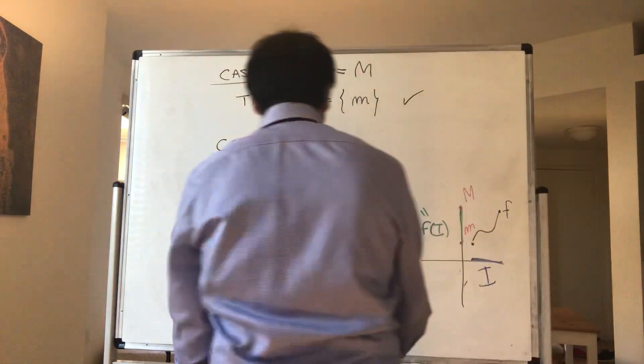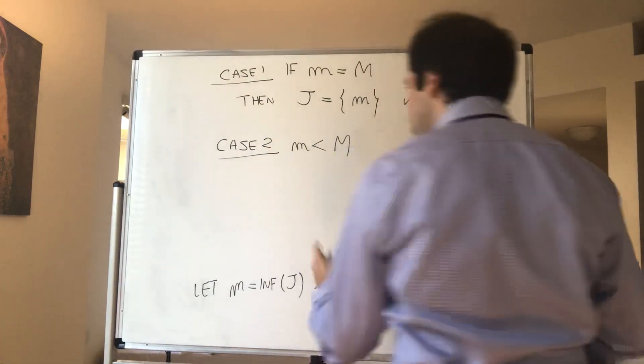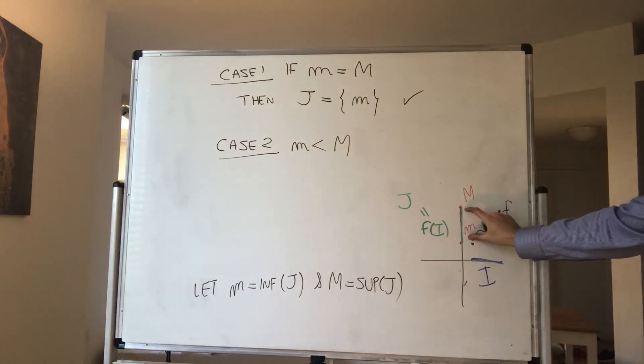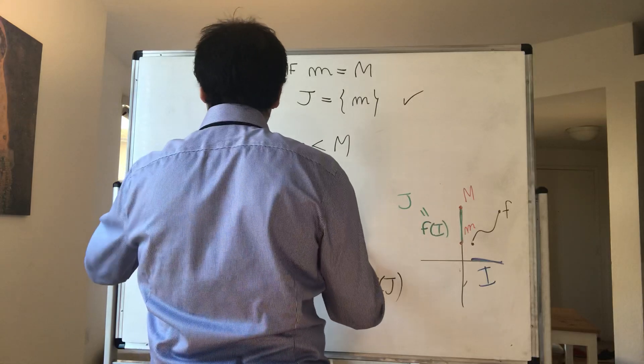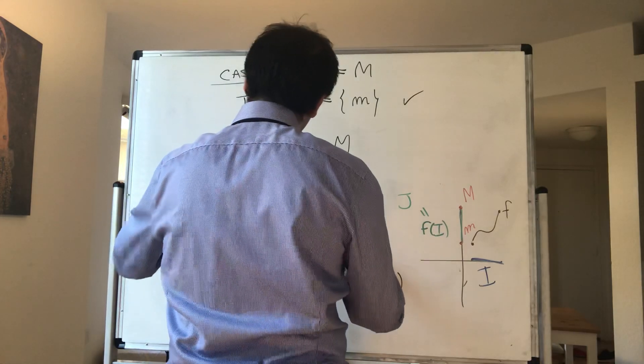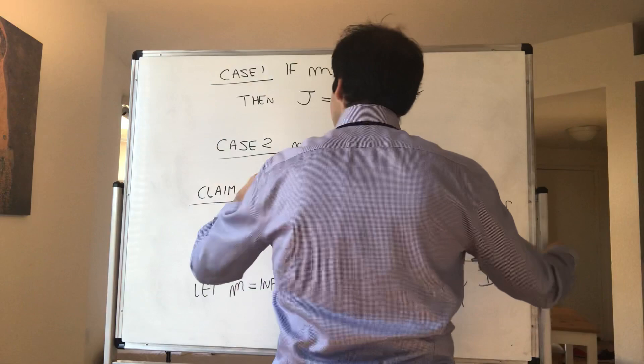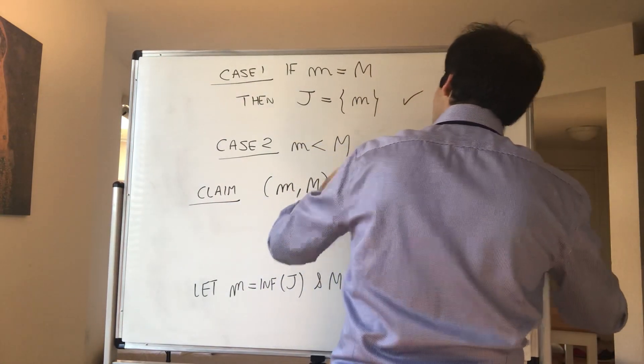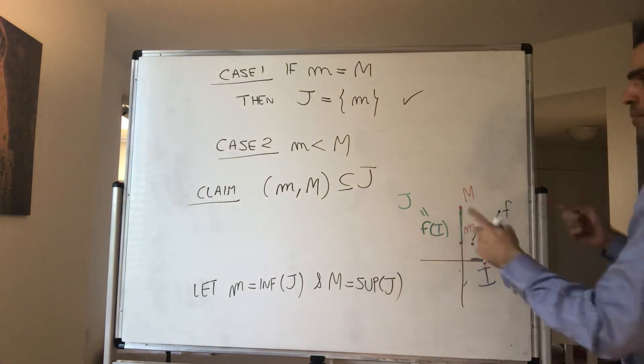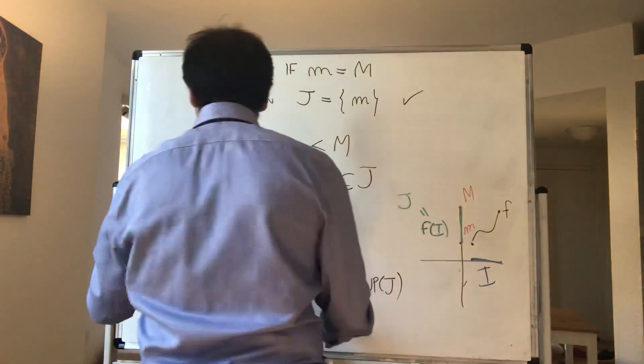So the interesting case happens when m is less than capital M. And here, what I want to show is the following: I want to show that J includes the interval (m, M). So claim: the interval (m, M) is included in J. And then we're done.